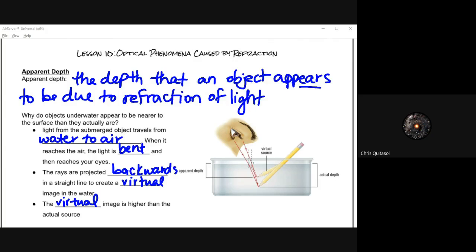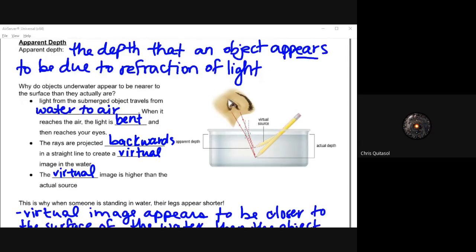The definition of apparent depth reads: the depth that an object appears to be due to refraction of light. So what happens when we stick an object in? Well, light from the submerged object travels from water to air. And if you recall, when it goes from a slower to a quicker medium...